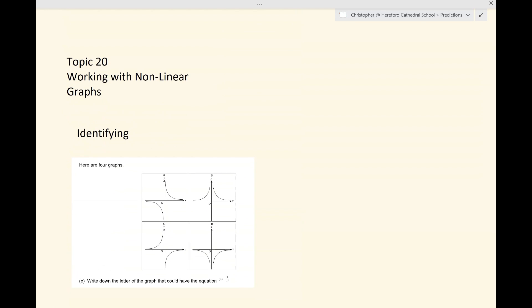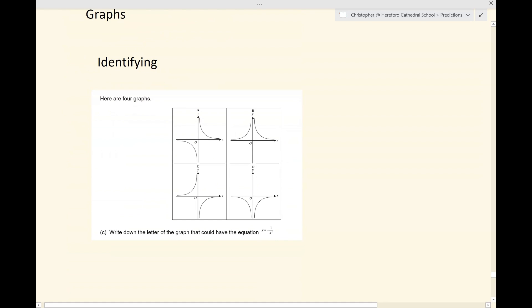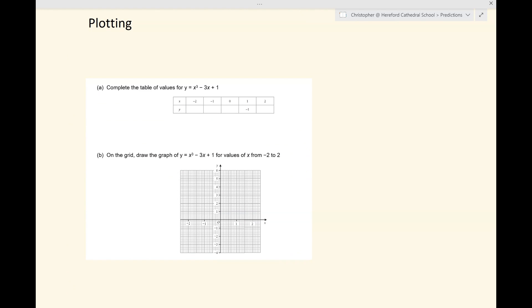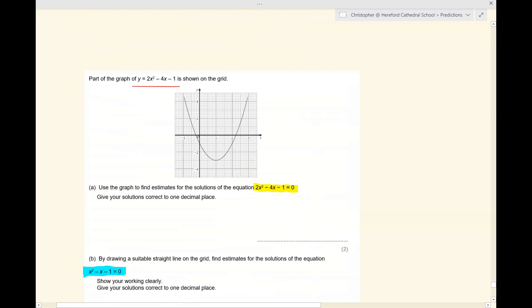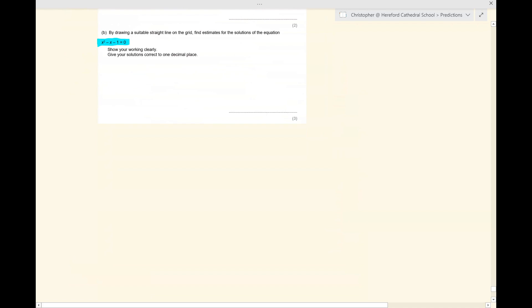Topic 20. We're almost there. Working with nonlinear graphs. Sometimes you're asked to identify graphs like these four. Sometimes you're asked to plot perhaps cubics or other sorts of graphs and often you use a table of values to do those. And then often you're asked to use graphs to solve equations. In this question, you're given the part of the graph of a certain function there, y equals 2x squared minus 4x minus 1. And in part A, there's a relatively straightforward equation to solve using the graph. And in part B, you're required to do some algebraic manipulation in order to solve that equation in part B, the one that's shaded in blue. So, I will put some useful films for you in my preparing for paper 2H playlist. Of course I will.